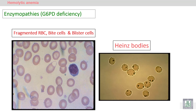On the peripheral blood smear, we can see fragmented red blood cells, as well as bite cells and blister cells. These are due to oxidized hemoglobin. Oxidized hemoglobin can be seen clearly with supra vital stain, which reveals Heinz bodies — these are oxidized hemoglobin molecules.